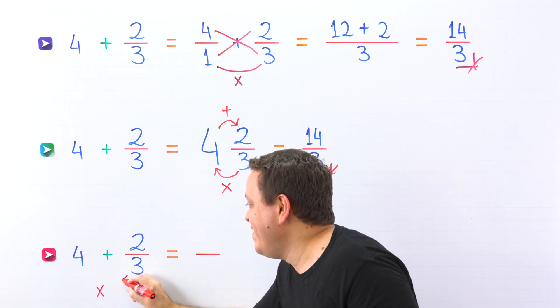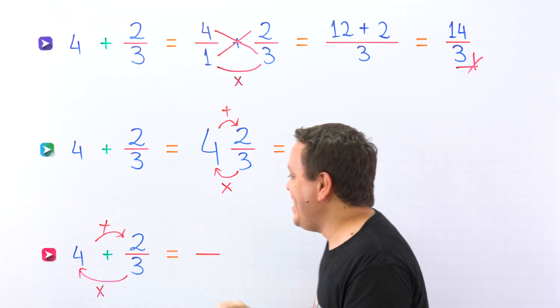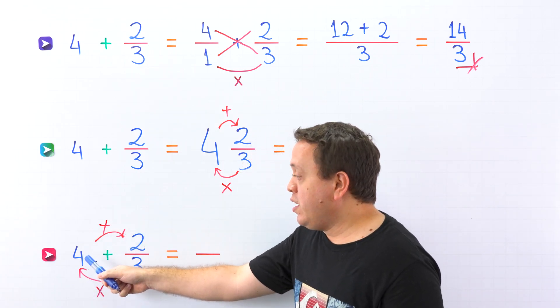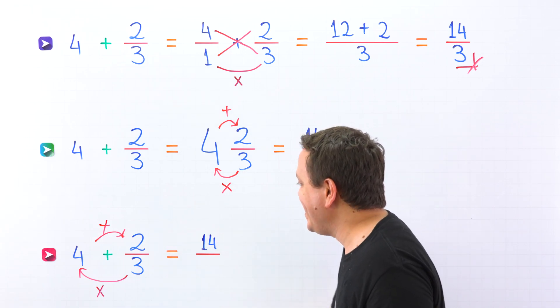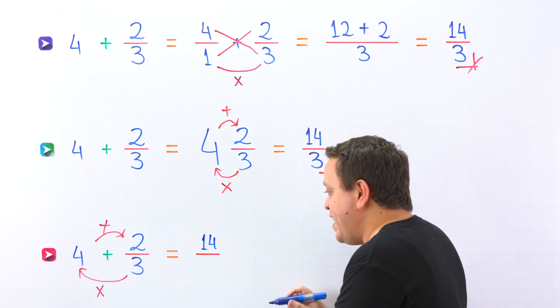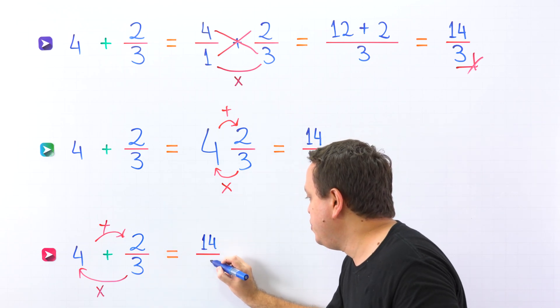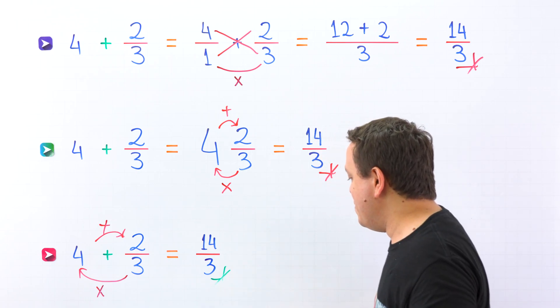The easiest way to add a whole number and a fraction is this one. First, we multiply the denominator by the whole number, then we add this result to the numerator. Here we go. 3 times 4 is 12 plus 2, give us 14. That is correct. 3 times 4 is 12 plus 2, give us 14. Finally, we keep the denominator the same. 3 come over here. The answer is 14 thirds one more time.